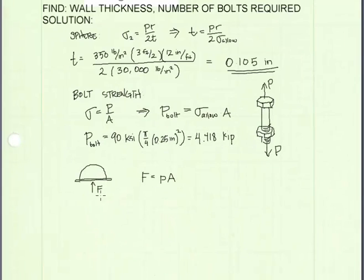So I've drawn a free body diagram of the lid, and there's a force acting on the lid trying to push it off. And that force is equal to the internal pressure inside the tank times the cross-sectional area of the tank right along this line here. And that's just based on the diameter, which we were given as 3 feet.